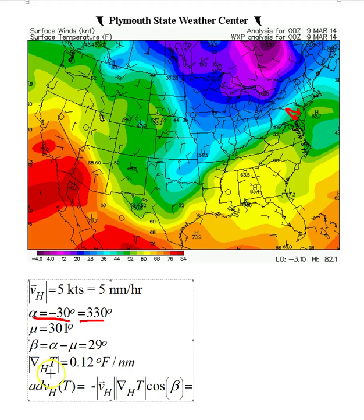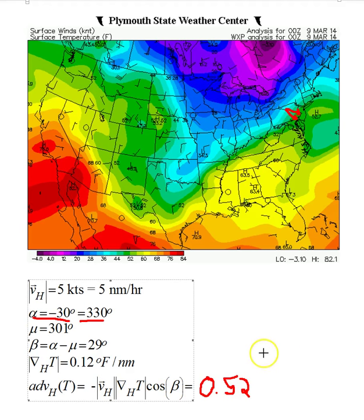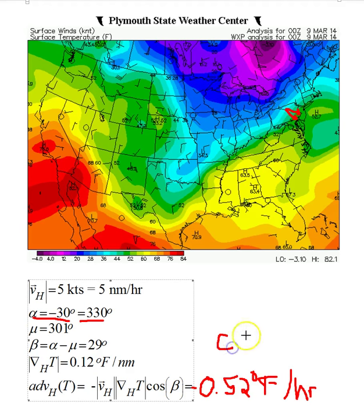We know that the magnitude of the temperature gradient is 0.12 degrees Fahrenheit. So when we multiply the magnitude of the velocity times the magnitude of the temperature gradient times cosine of 29 degrees, we end up getting a value of minus 0.52 degrees Fahrenheit per hour. The minus sign is here because velocity, gradient magnitude, and cosine are all positive. And so the advection is minus 0.52 degrees Fahrenheit per hour. This is cold air advection, or cold advection.